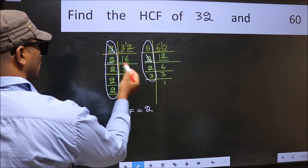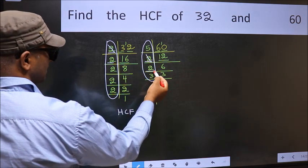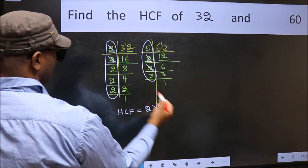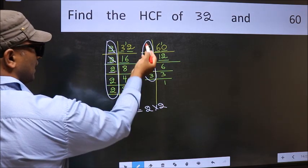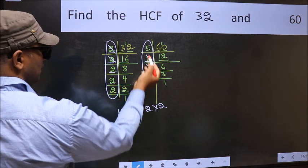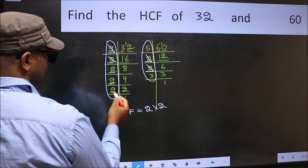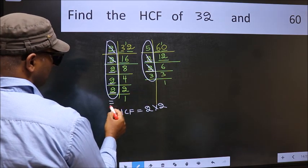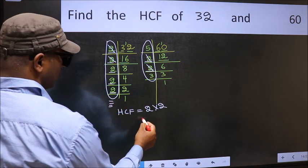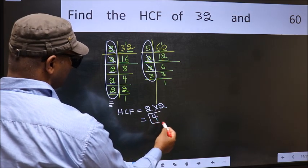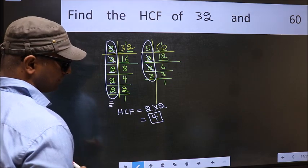Next number 2. Do we have 2 here? No. Next number 2. Do we have 2 here? No. No more numbers have been left out. So, our HCF is 2 into 2, 4. 4 is our HCF.